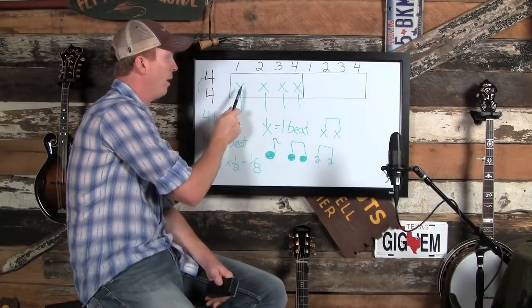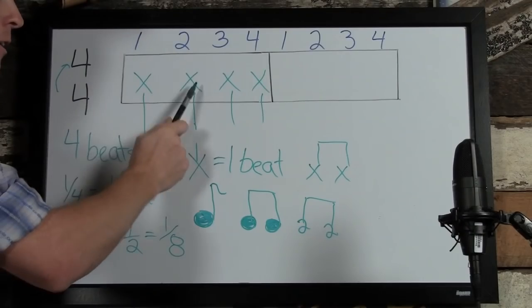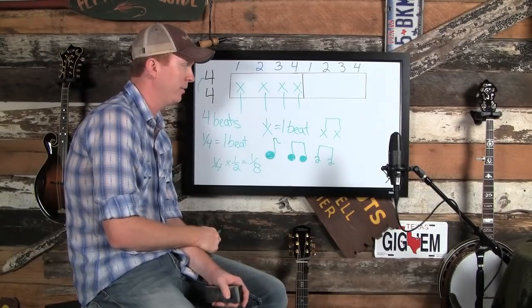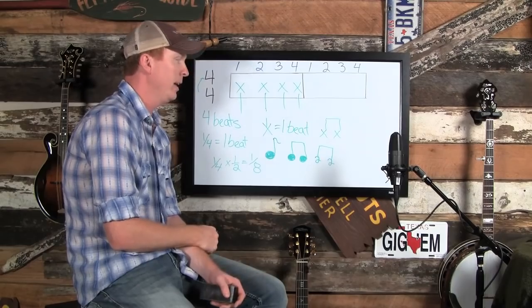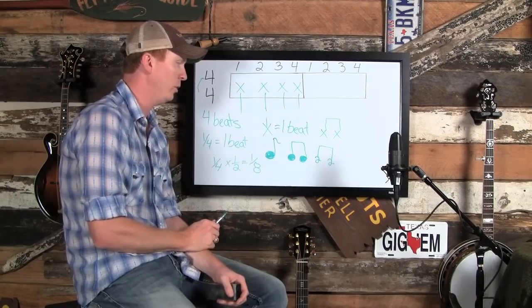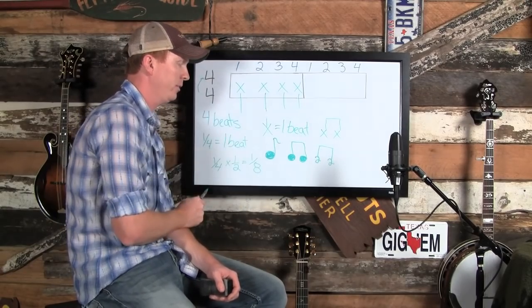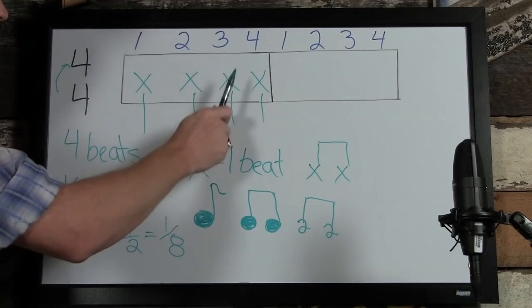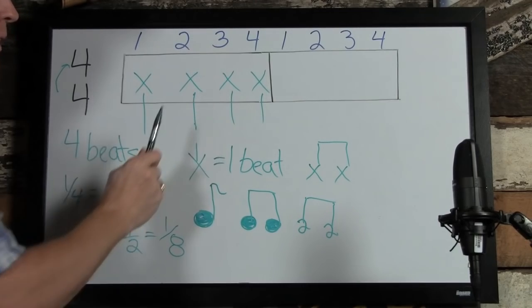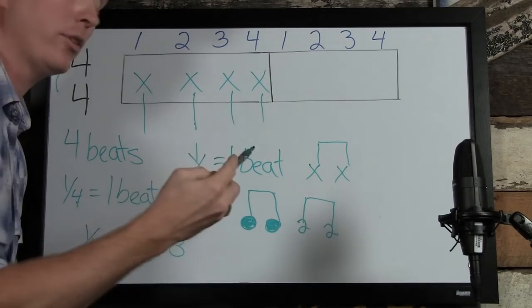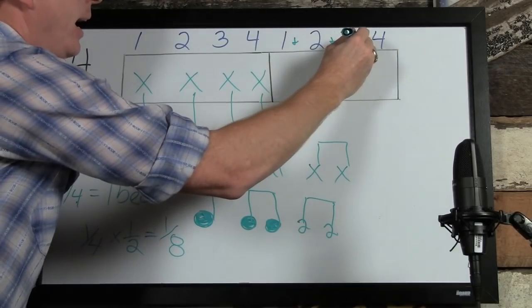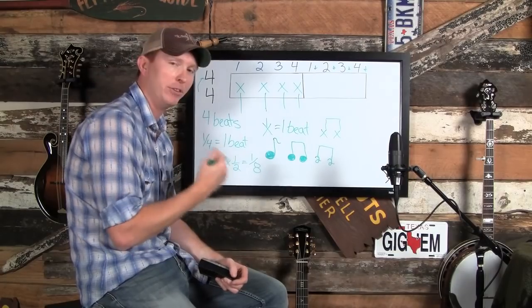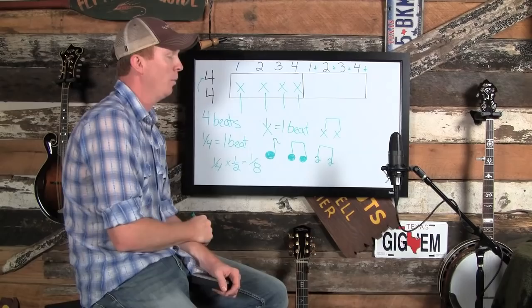Now let's look at our standard measure with the basic rhythm we've been playing — four quarter notes, bass-strum, bass-strum — and decide where we can make it more advanced. We're going to take one of these quarter-note X's and substitute it with two eighth-note X's, which has the same amount of time. Counting along: one, two, three, four. We then count a subdivision: one-and, two-and, three-and, four-and. The speed of the song doesn't change — we're just adding subdivisions to our four beats.